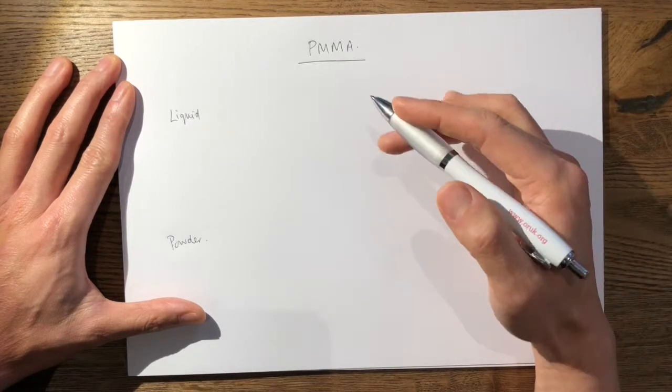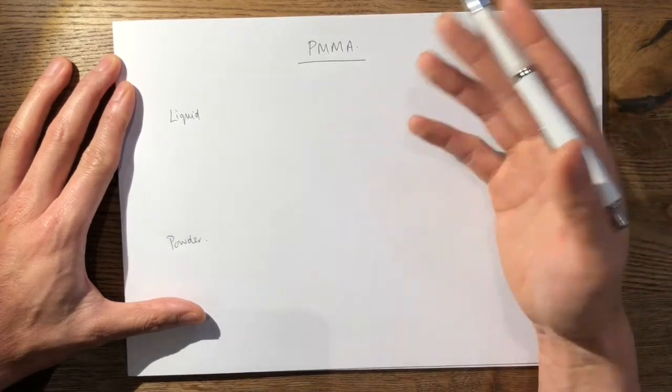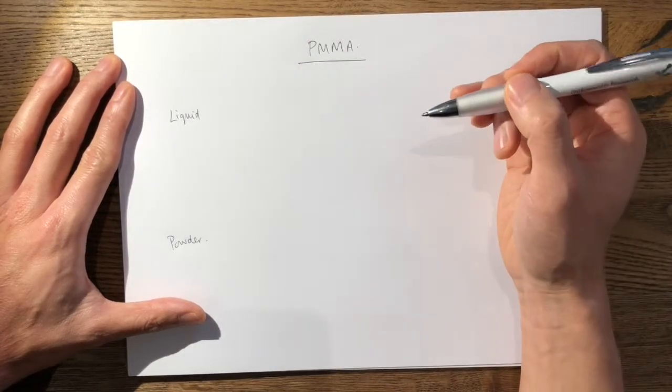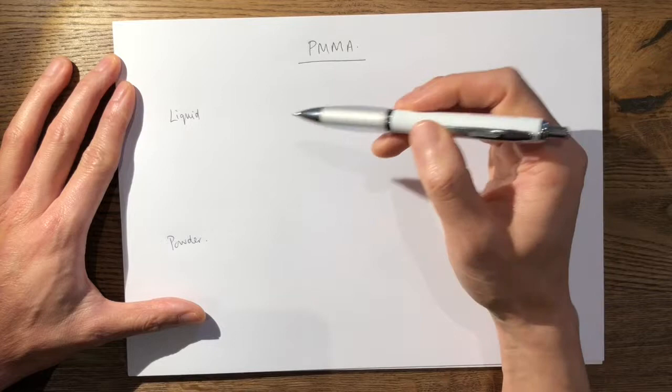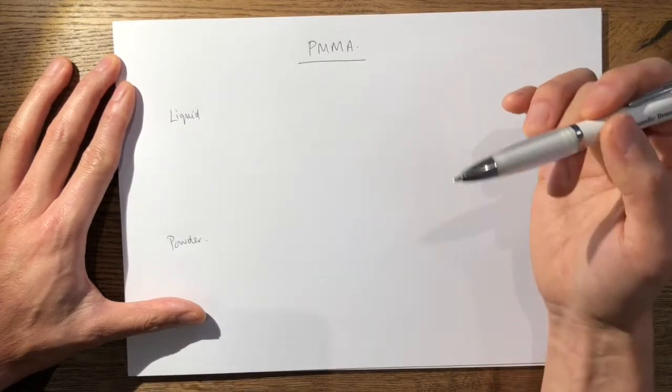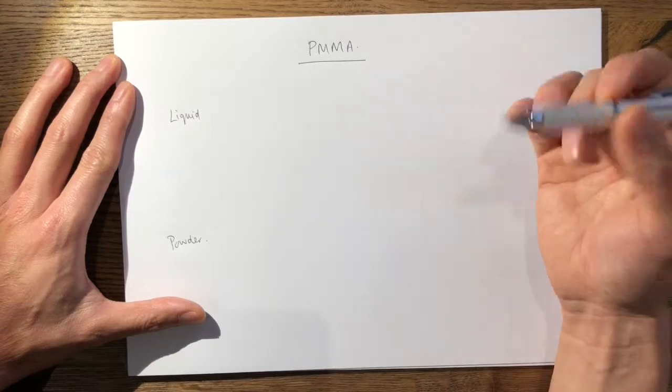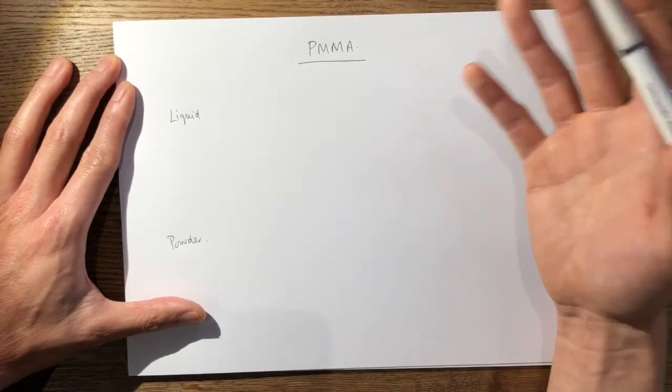It also exhibits viscoelastic properties. The examiner may ask you to draw the graphs for the four different types of viscoelastic property, which includes creep, hysteresis, strain rate dependent strain, and stress relaxation, which is all explained in another video.